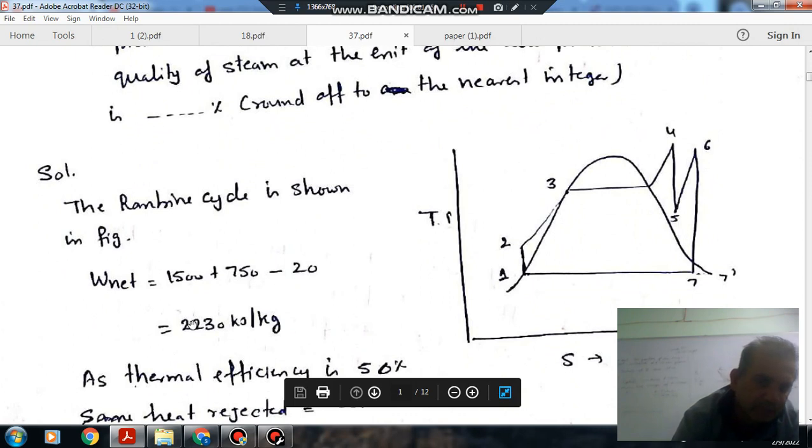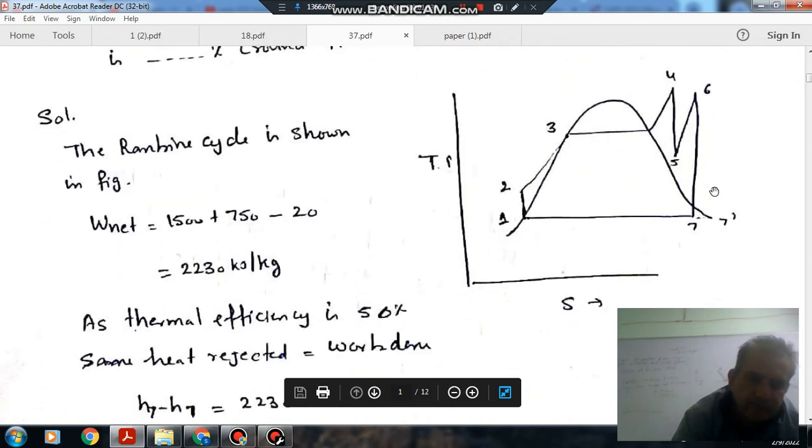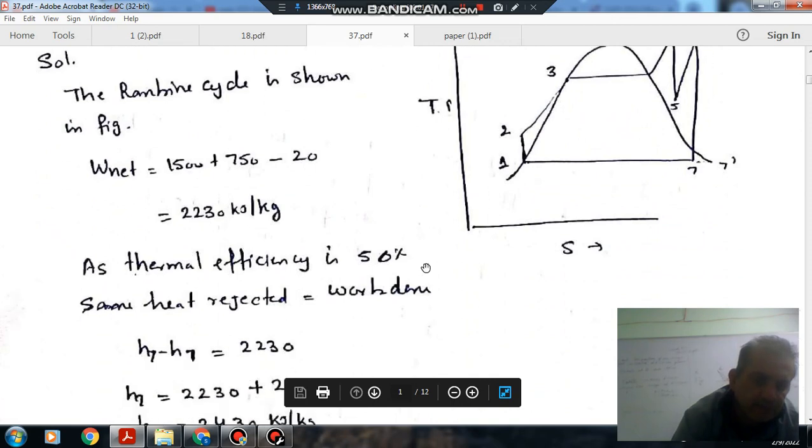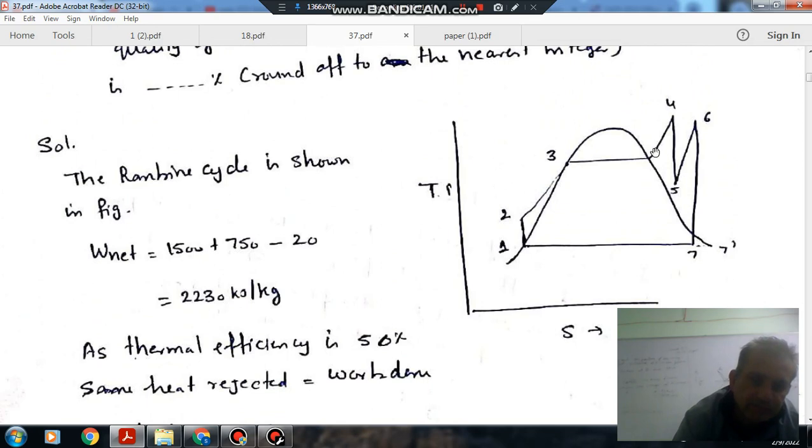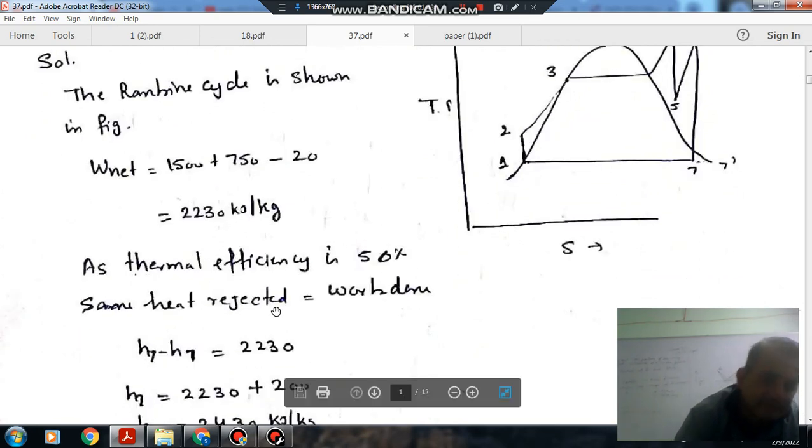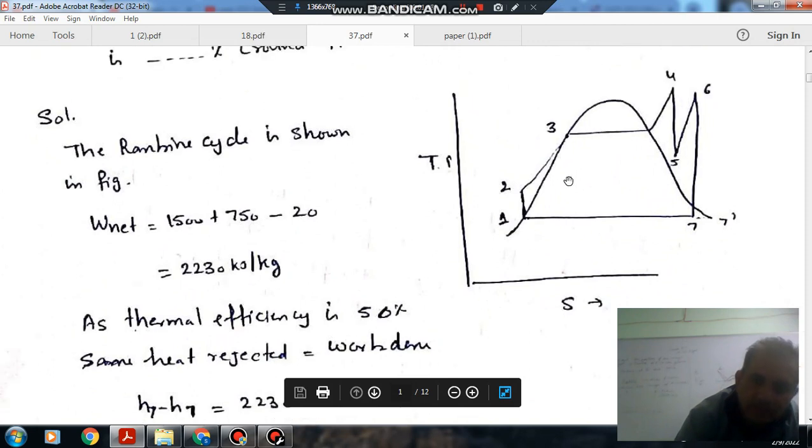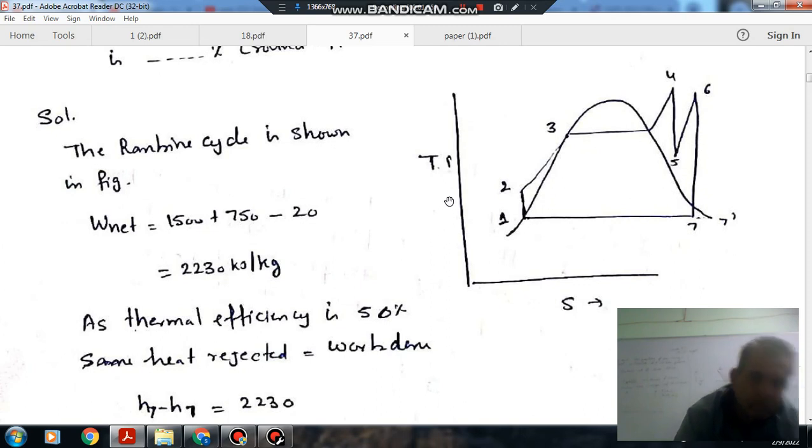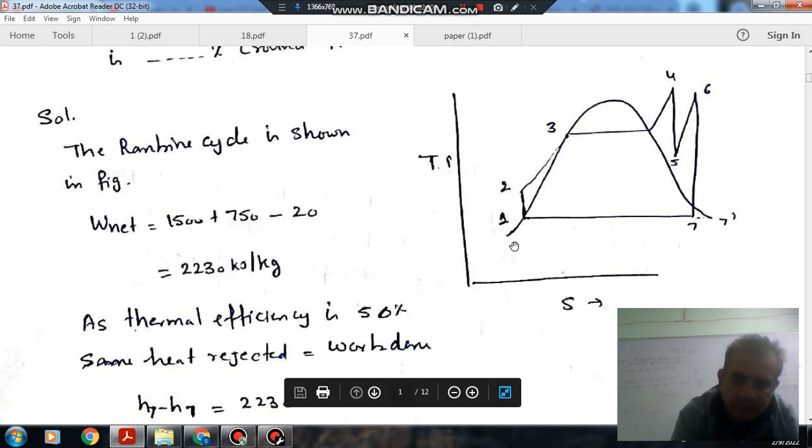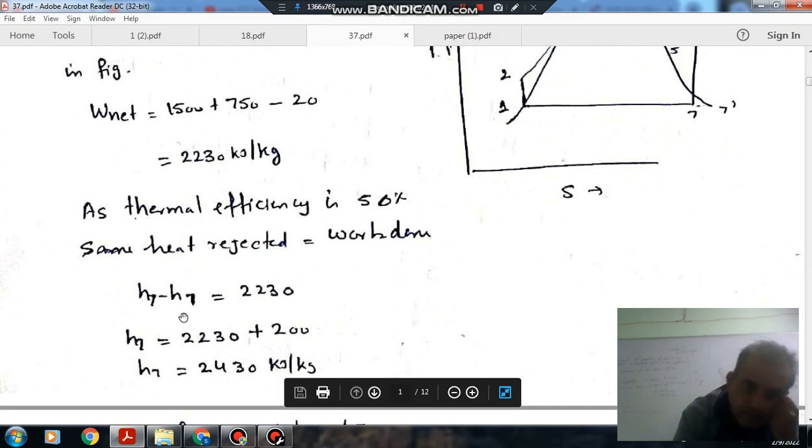Thermal efficiency is 50%. It means work done is equal to heat rejected. Because 50% is work and 50% is heat rejected. Heat rejected from the condenser is from H7 to H1, which equals 2230. So H7 equals 2430.